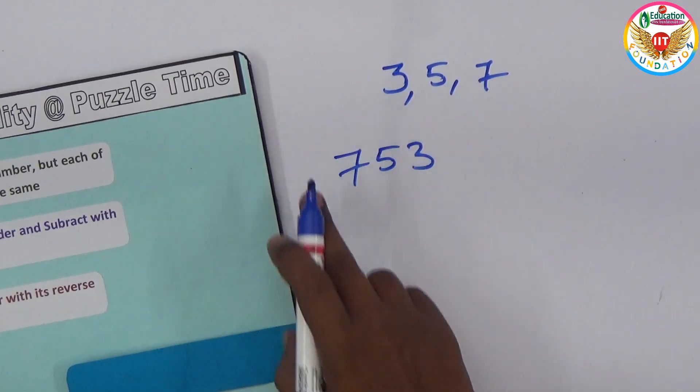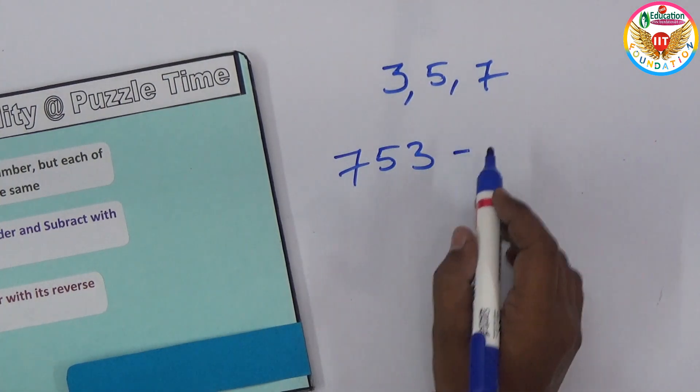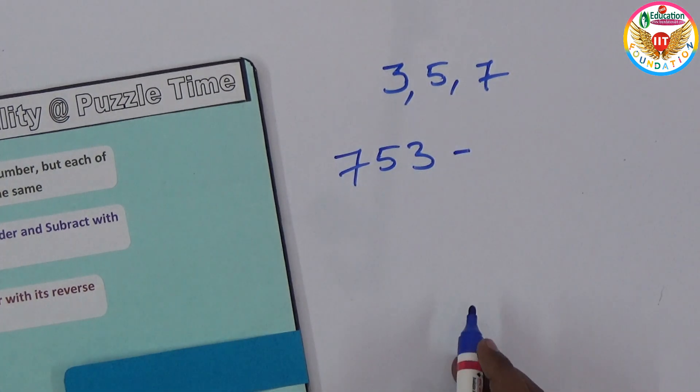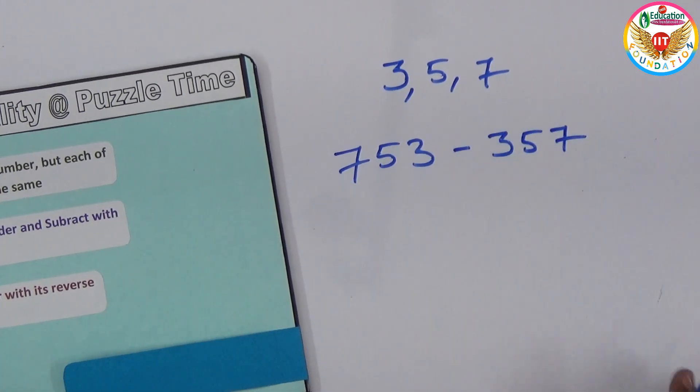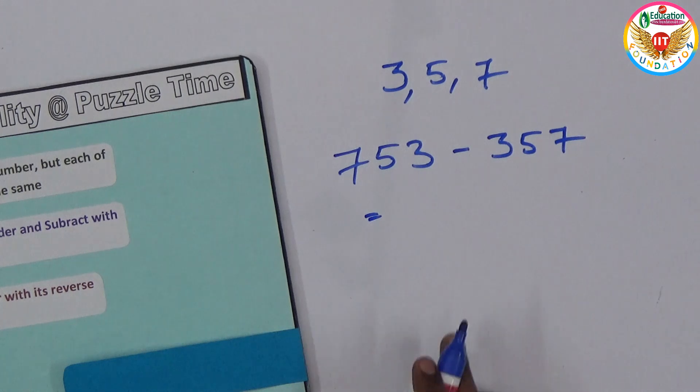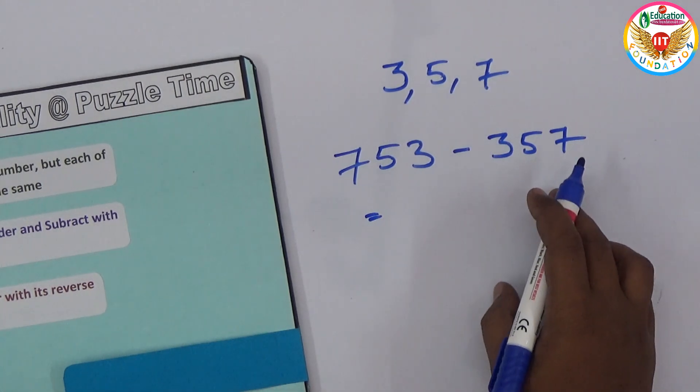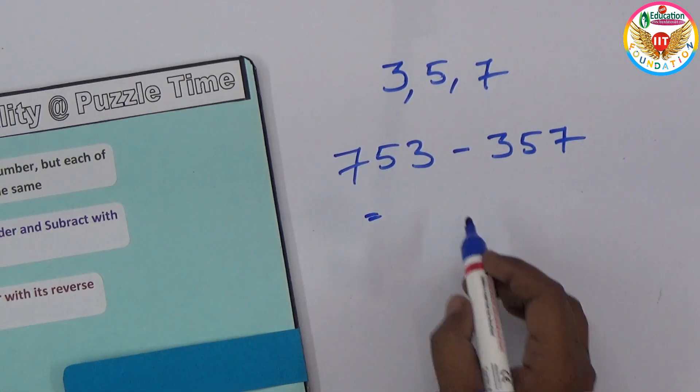Now take the same number and subtract with the reverse of this. 753 reversed is 357. If you subtract 753 minus 357, that is 396.